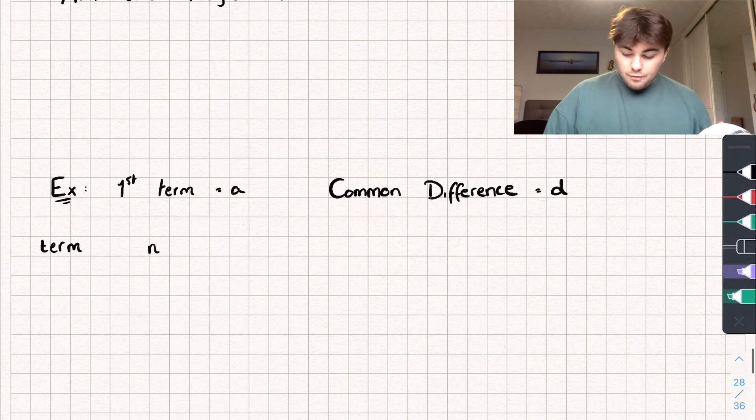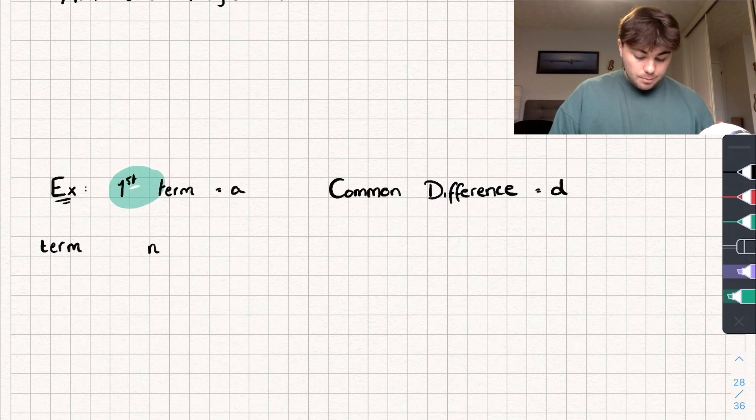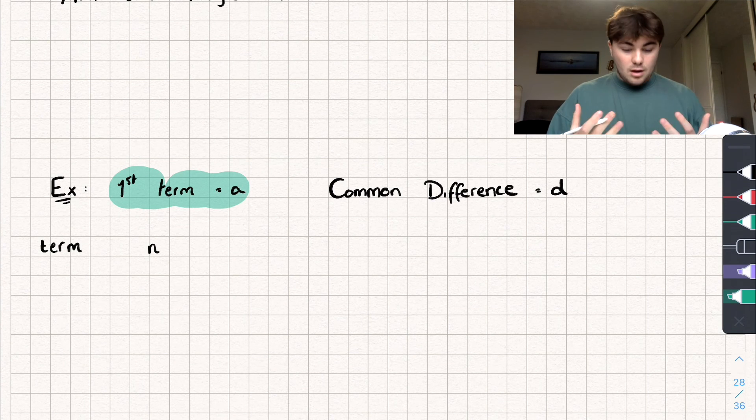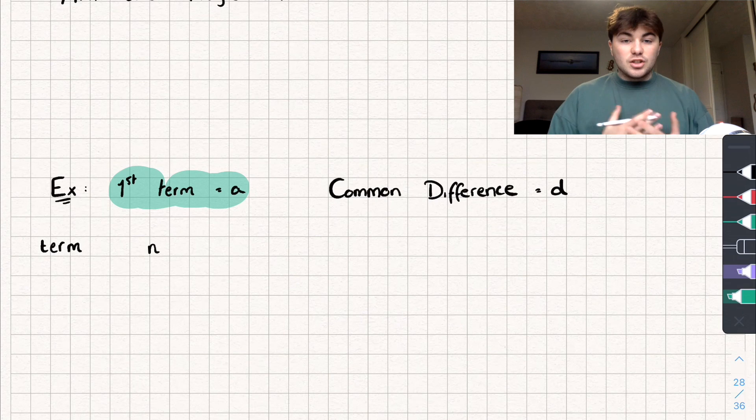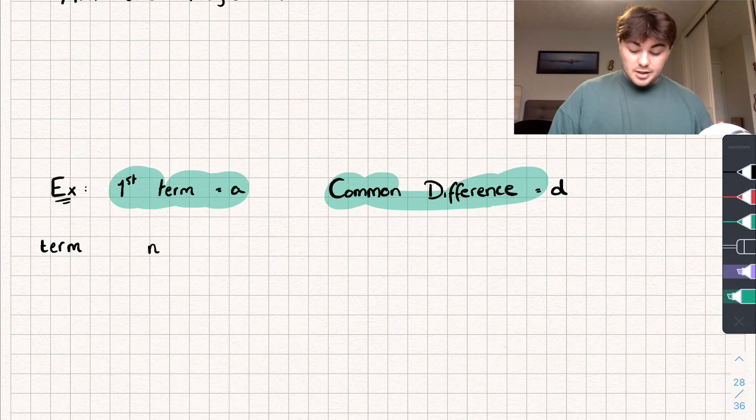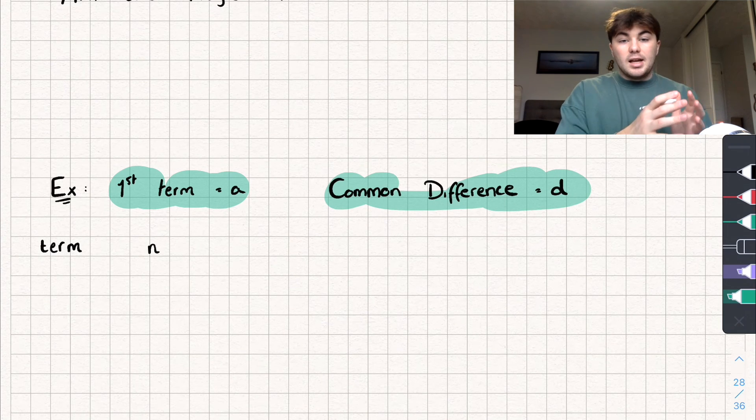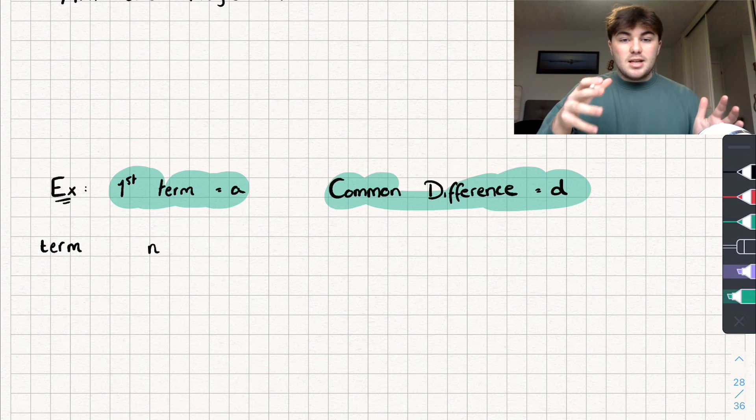So say we have a first term of our arithmetic progression being a. Okay, so that's our first term. So it's going to start at a. And it has a common difference of d. Okay, so all that means is we're going to start at a. Our second term is then going to be a plus d and so on.